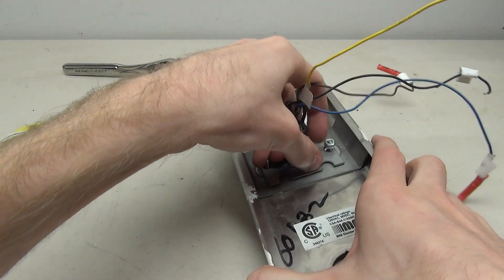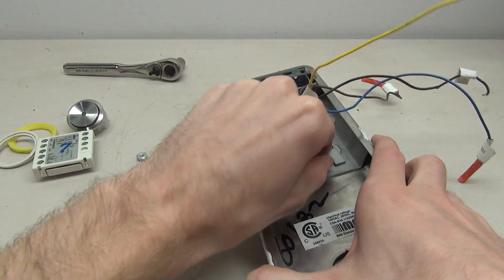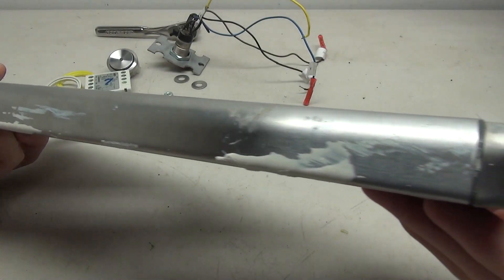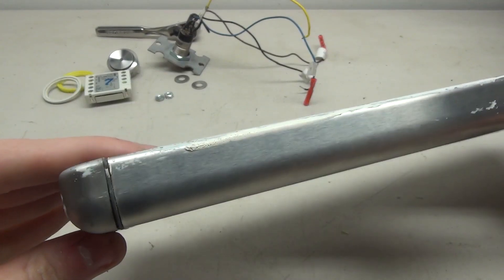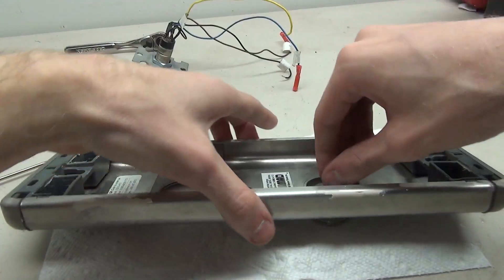Taking the key switch off is also very easy—just remove these two nuts and then pull the key switch off. Having everything off this panel makes it a lot easier to clean and get some of this splattered paint off. After a little bit of cleaning, the panel looks a lot nicer. Now that it's cleaned up, we can put everything back together and get started on the wiring.